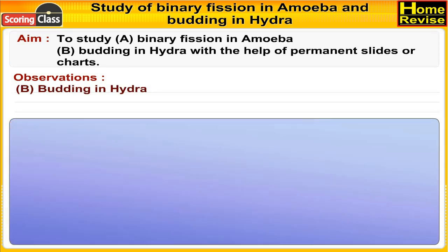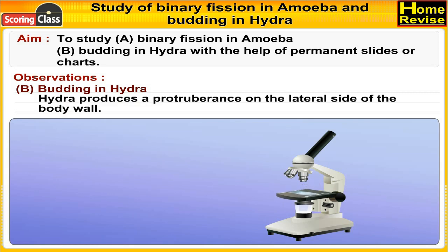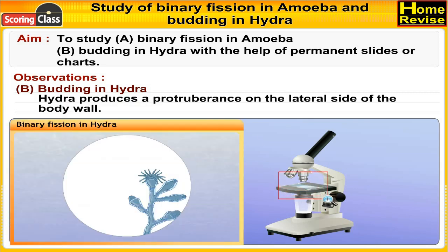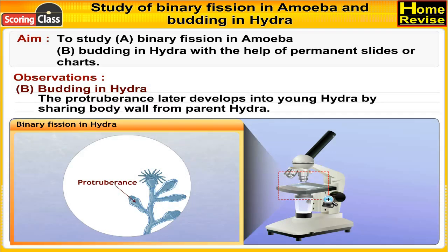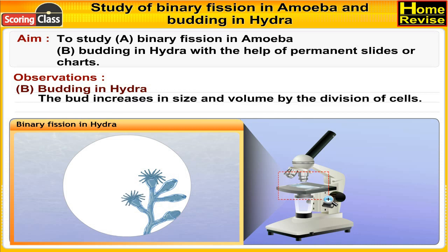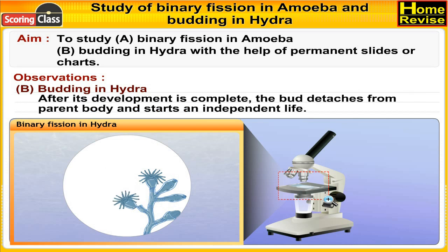B) Budding in hydra: hydra produces a protuberance on the lateral side of the body wall. The protuberance later develops into a young hydra by sharing the body wall from the parent hydra. The bud increases in size and volume by the division of cells. After its development is complete, the bud detaches from the parent body and starts an independent life.